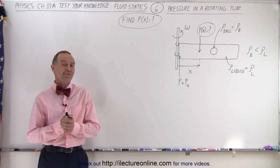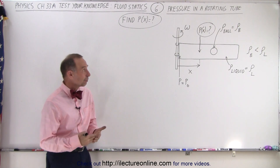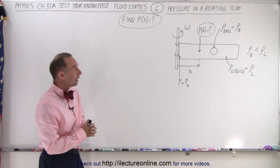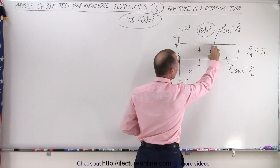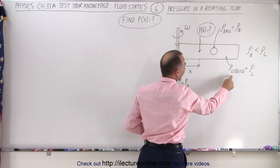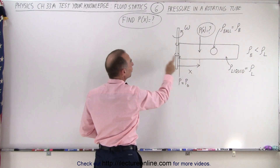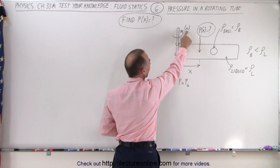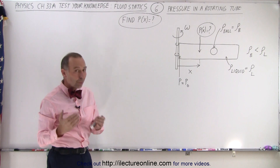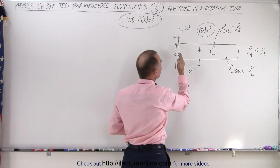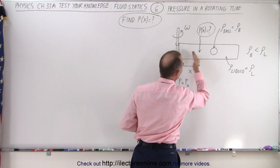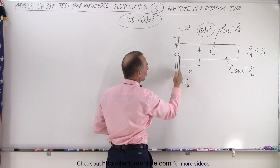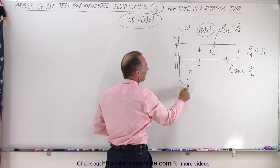Welcome to Electron Line. We have another very interesting problem. Here we have a tube that's completely filled with water or liquid. Inside the tube we have a wooden ball where the density of the ball is less than the density of the liquid. The tube is rotating about this axis at angular velocity omega. We want to find the pressure inside the tube as a function of x — the pressure at a distance x from the axis of rotation, assuming that the pressure at the very beginning is equal to P-naught.